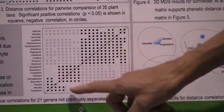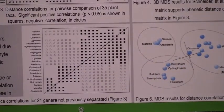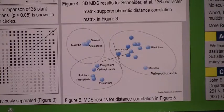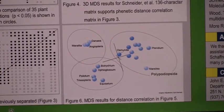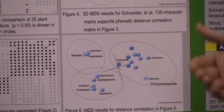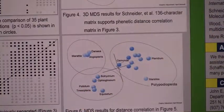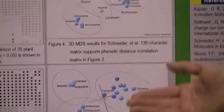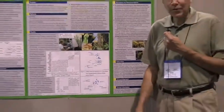What we conclude is that we have a character matrix that is a good start, and one that we can work with to help develop new hypotheses — to sharpen up the character definitions and character states — and be able to test new hypotheses that may be able to address this controversy.